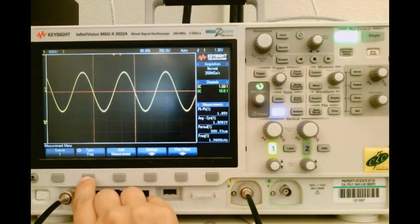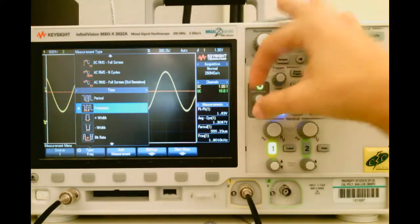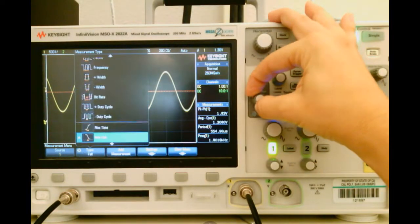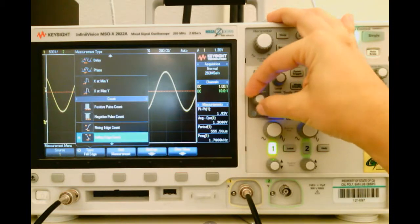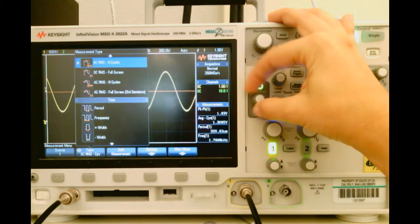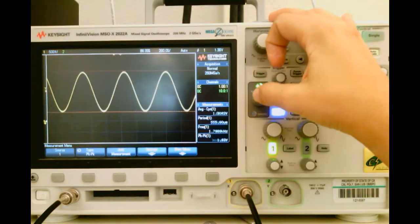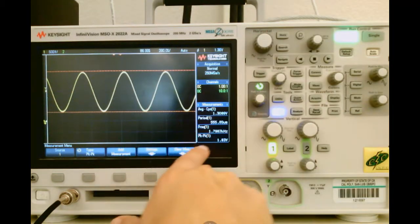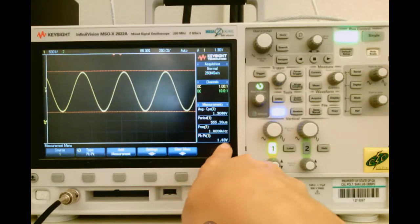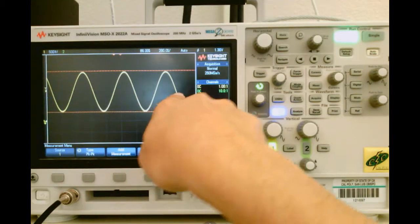Let's get the peak-to-peak value. Let's scroll to the type that's under voltage. So there we have peak-to-peak, and there we have peak-to-peak is 1.8 volts.